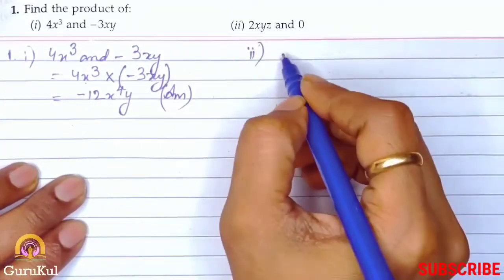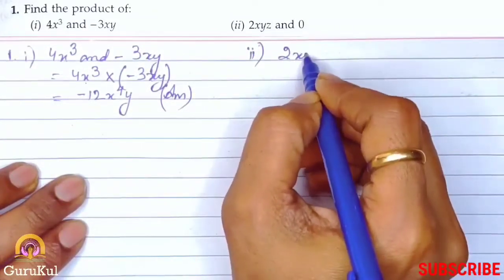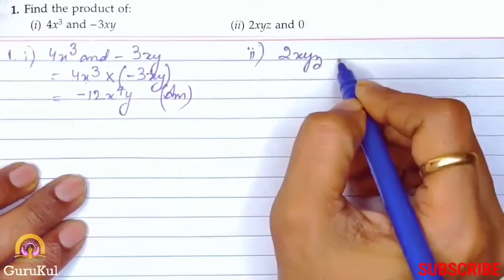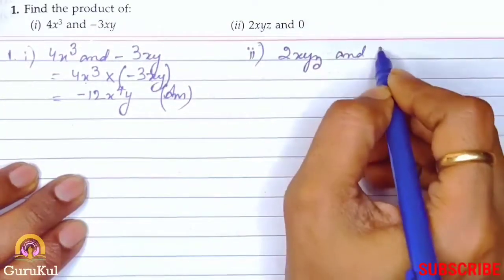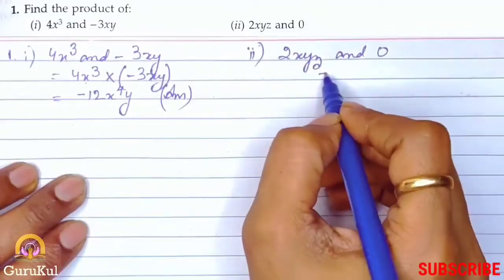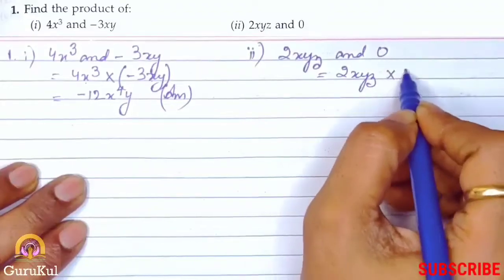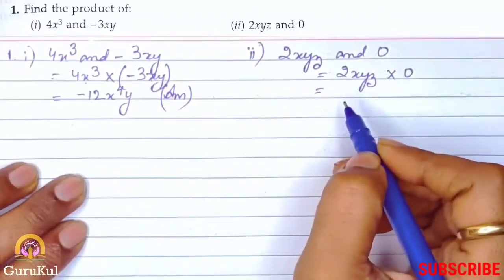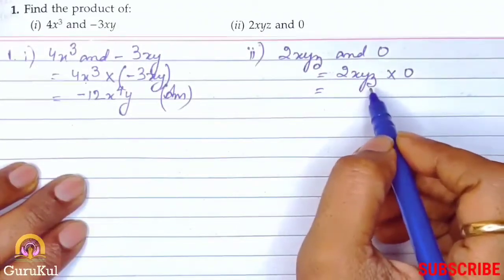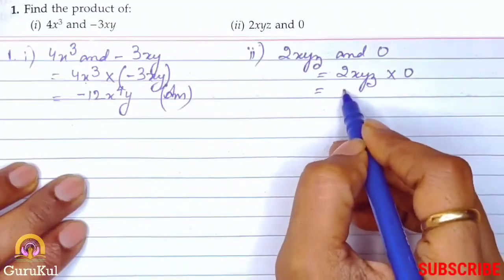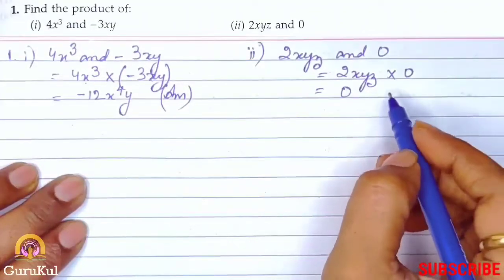Second one. It is 2xyz and 0. That means we need to multiply 2xyz into 0. So we all know that any number multiplied by 0, the answer is always 0.